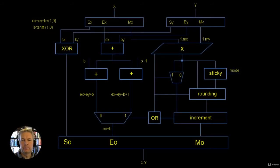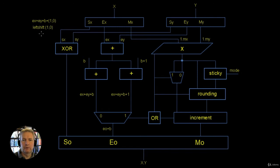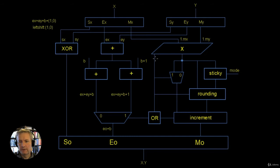As we've seen when we worked out our algorithm for normal times normal giving a normal result, the mantissa will shift by a value of 1 to the left, or a value of 0 — meaning the decimal point can shift one place to the left or remain where it is. That shift depends on the value of the 48th bit of the multiplication. The 48th bit comes down, and one copy goes into the exponent, while another copy goes into this multiplexer here for the mantissa.